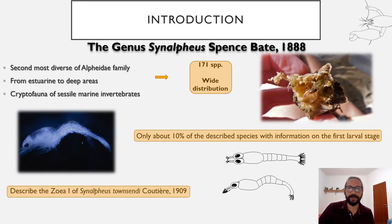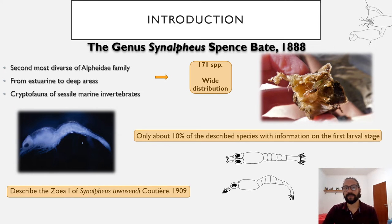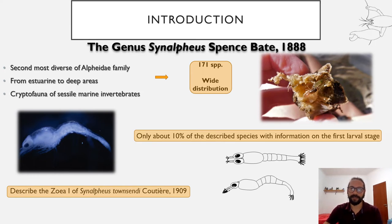The genus Synalpheus is the second most diverse in the Alpheidae family from the Caribbean. They occur from estuarine to deep areas and are normally associated with sessile marine invertebrates, such as sponges and corals. They have today 171 species with a wide distribution around the world.